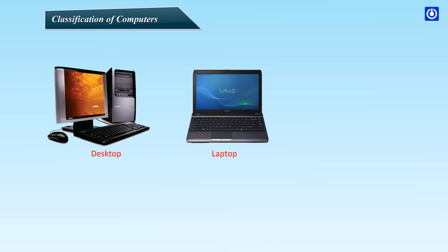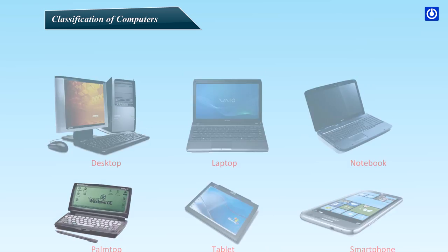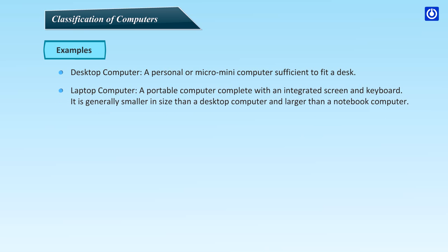Examples include Desktop, Laptop, Notebook, Palm Top, Tablet, and Smartphone. A Desktop Computer is a personal or micro-mini computer sufficient to fit on a desk. A Laptop Computer is a portable computer complete with an integrated screen and keyboard, generally smaller than a desktop but larger than a notebook.